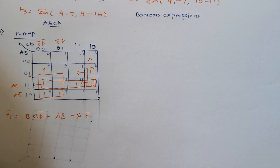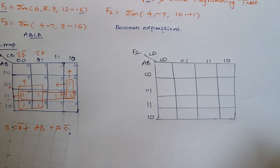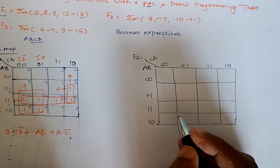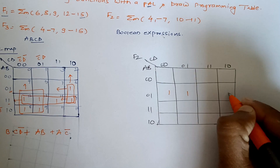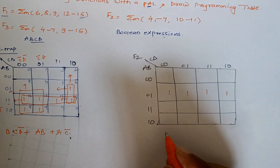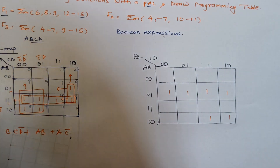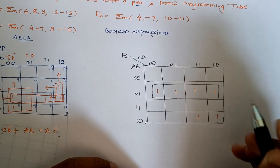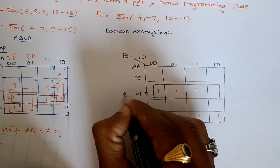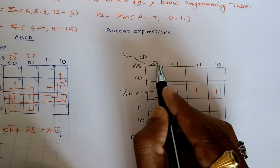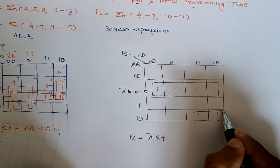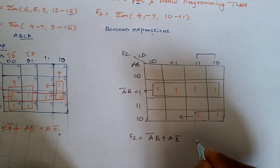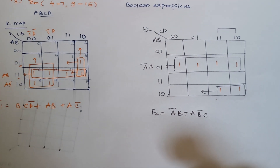Similarly, we will derive the expression for F2. We draw a four-variable K-map for F2 with inputs A, B, C, D. F2 has minterms from 4 to 7, so cells 4, 5, 6, 7 are marked as 1. And again from 10 to 11, so cells 10 and 11 are marked. Now let's form pairs or quads. We can form a quad for cells 4-7 giving Ā·B. For cells 10 and 11 we take a pair giving A·B̄, and taking C as common from this side. So F2 equals Ā·B + A·B̄·C.